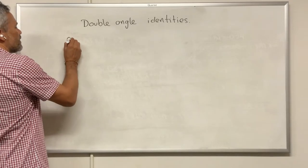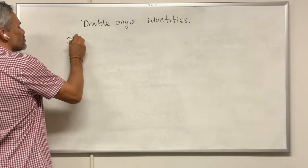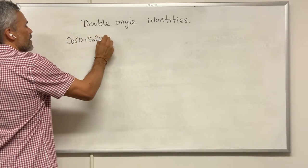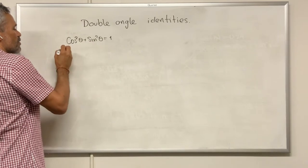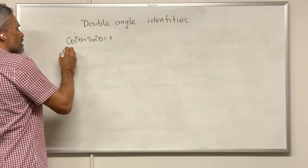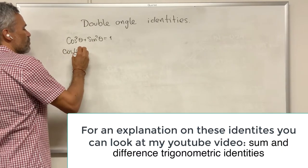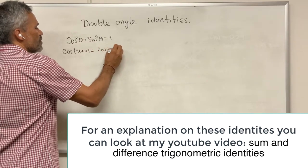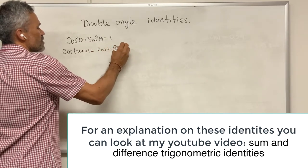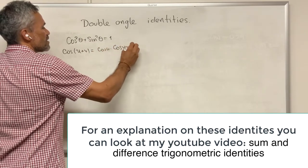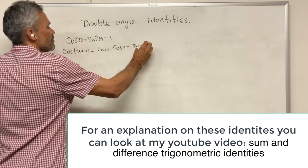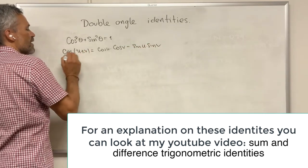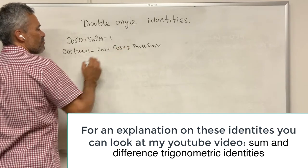We have the following identities. Cosine squared of theta plus sine squared of theta is equal to 1. We also know that cosine of u plus v is cosine of u times cosine of v minus sine of u sine of v. And if you have a negative, then you have a positive.